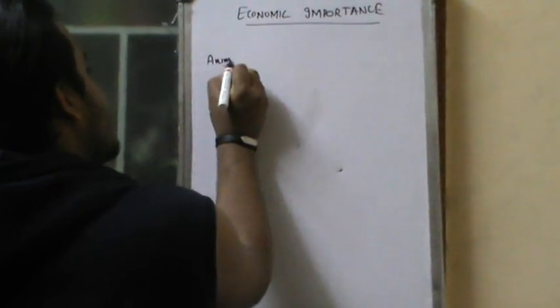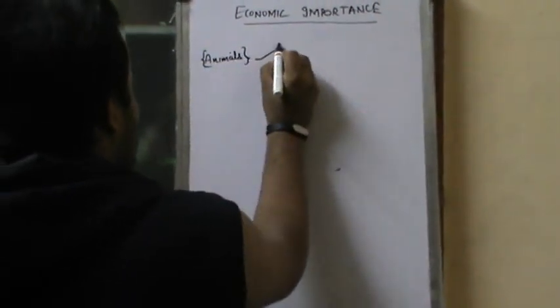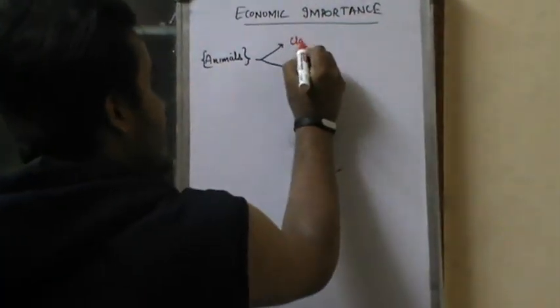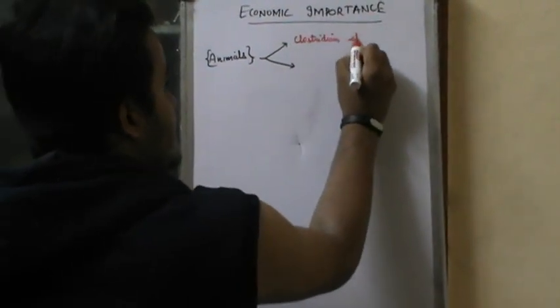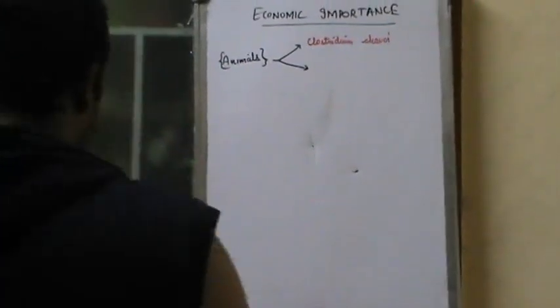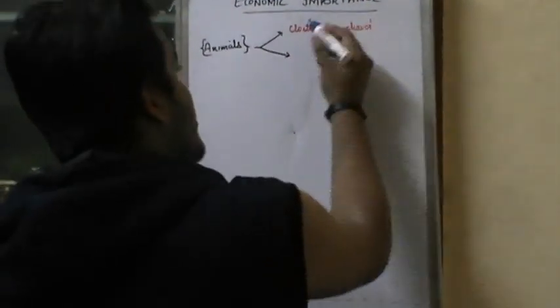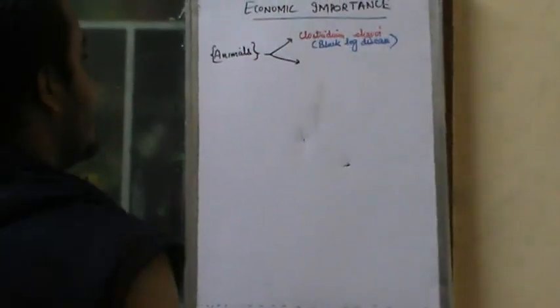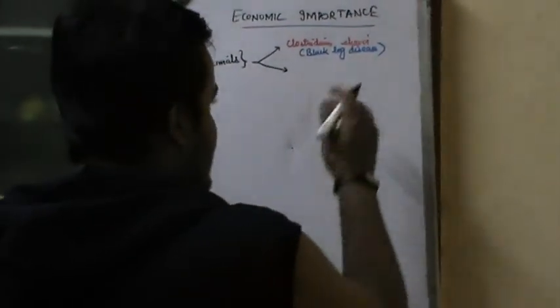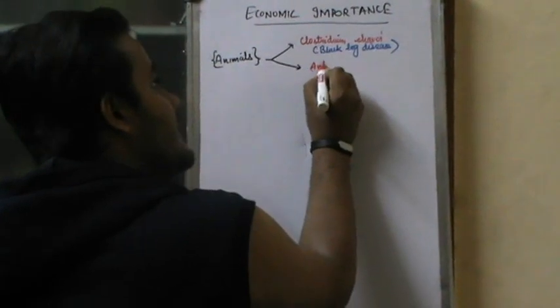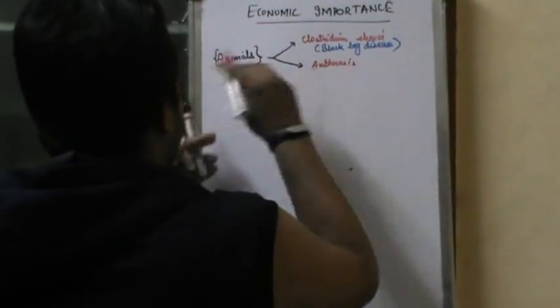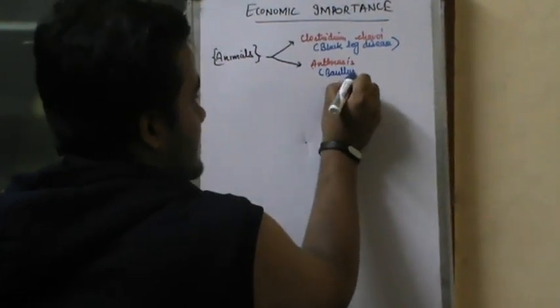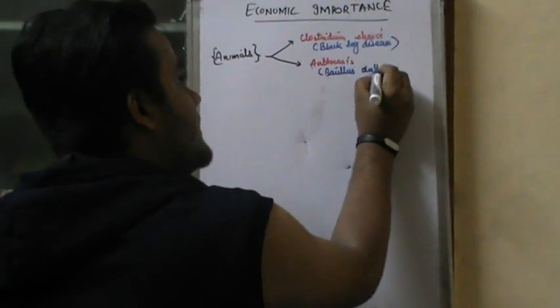The bacteria that cause disease to animals are very, very important — seriously, this is an NCERT example. Clostridium chauvoei is that particular group of bacteria that causes black leg disease in animals. There is also Anthrax disease, which is caused by Bacillus anthracis. This is one of the very important NCERT examples.